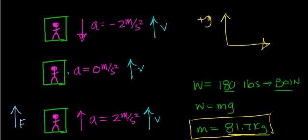To review a few things: we had a person in an elevator with a weight of 180 pounds, which was about 801 Newtons. Using the relationship that relates weight in Newtons to mass, we figured out that the mass of this person — a person with a weight of 180 pounds or 801 Newtons — was about 81.7 kilograms.